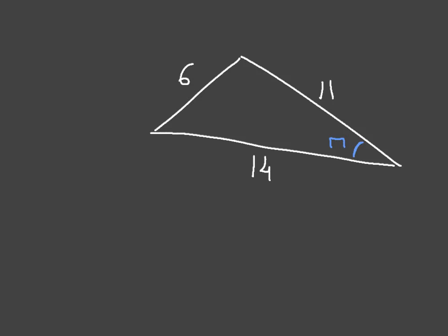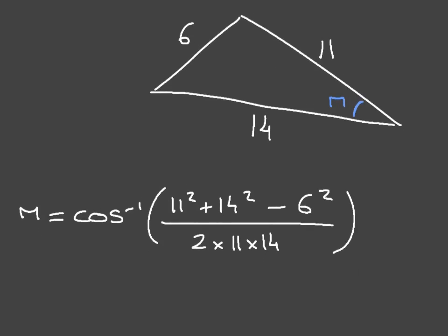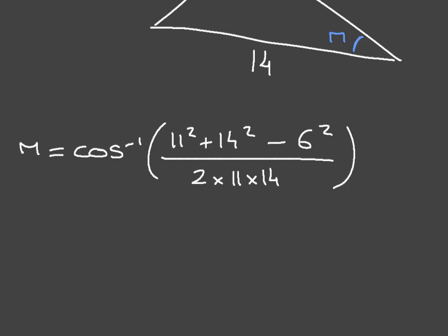As soon as you're looking for an interior angle but don't have any other interior angles in the triangle, provided you have all three side lengths, go ahead and use the cosine rule. We can write M equals the inverse cosine of the sum of the squares of the two adjacent sides — that's 11 squared plus 14 squared — minus the square of the opposite side, which is 6 squared, divided by 2 times the product of the adjacent sides, 11 and 14. Using a calculator and rounding to one decimal place, we find M is equal to 24.2 degrees.